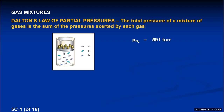If we remove the nitrogen and argon instead, leaving only oxygen in the container, the pressure of just the oxygen in the mixture would be 161 torr. And if we remove the nitrogen and oxygen, leaving only the argon atoms and measure the pressure exerted by them, that pressure would be 8 torr.